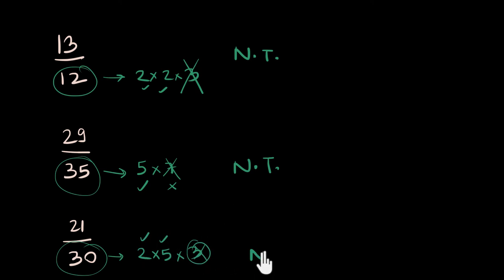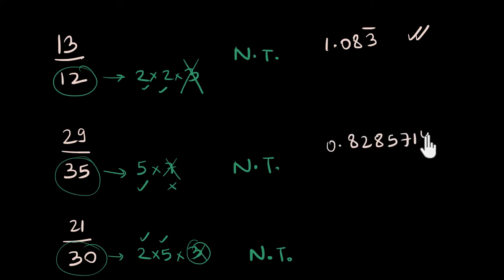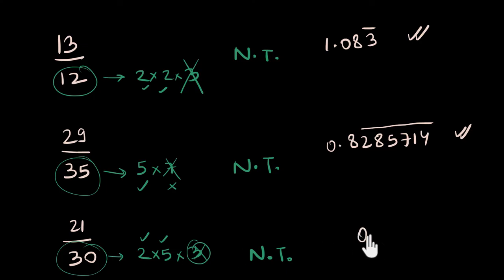Let's verify with a calculator. 13 by 12 is 1.0833... with 3 repeating — non-terminating, so we were right. 29 by 35 is 0.828571... repeating — non-terminating, so we were right. But 21 by 30 is actually 0.7 — that ends! Something's wrong — this was supposed to be non-terminating. Pause and see if you can figure out what's going on.